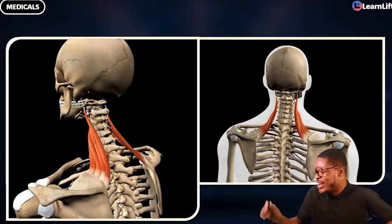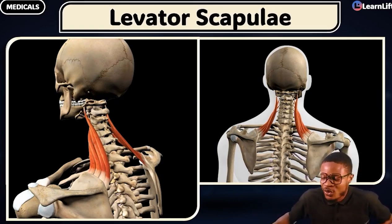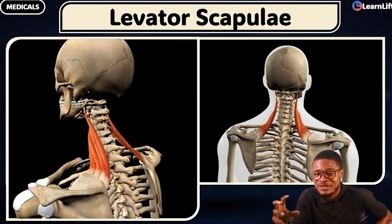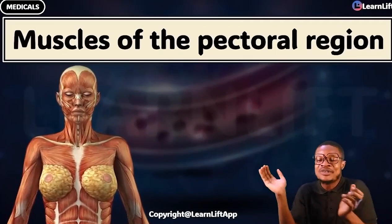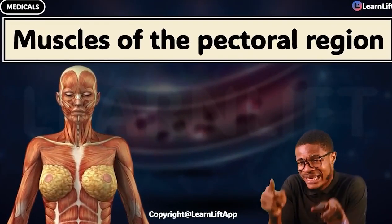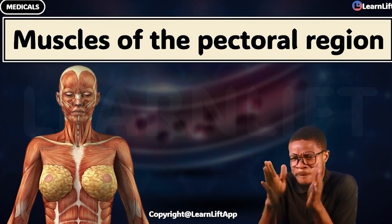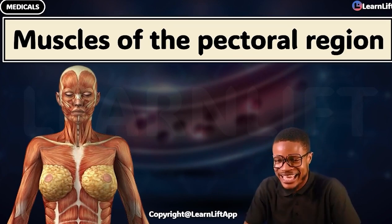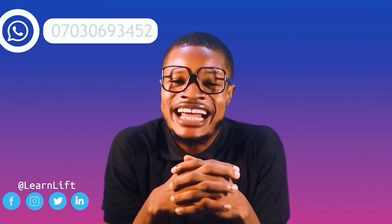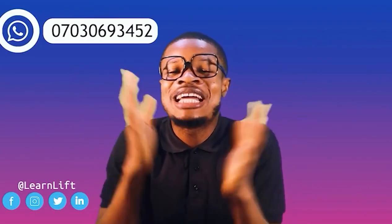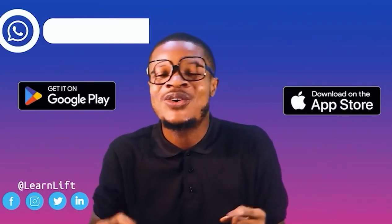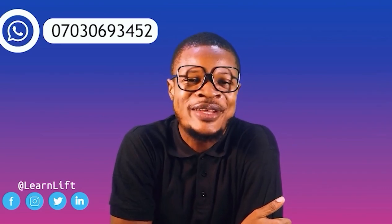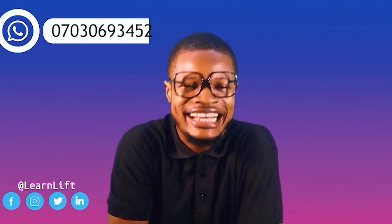And what is the name of this muscle? Levator scapulae. What does it do? It elevates the scapula. That's everything about the muscles of the back in relation to the upper limb. I'll see you in the next class — lesson 5, where we look at the muscles of the pectoral region. Download the Learn Lift app on Play Store or App Store to follow up. Bye-bye!